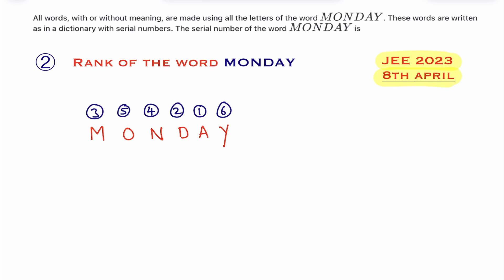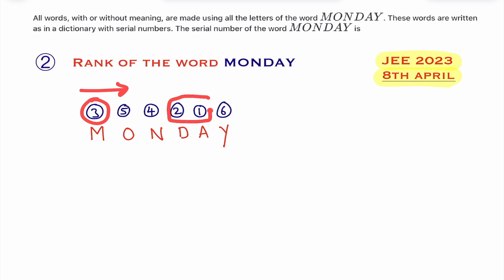Now observe from M towards the right side only. Here 3 is there. To the right side of 3, how many numbers are there which are less than 3? You see these two numbers are less than 3. So you write 2 here.